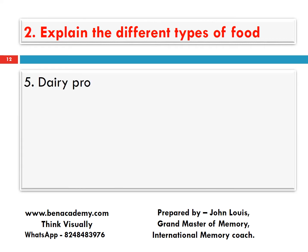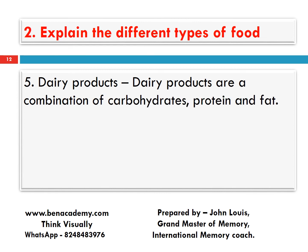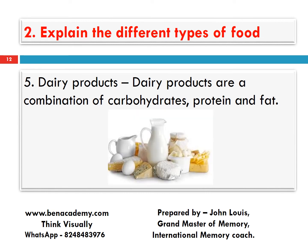Next, dairy products — that means milk products. Dairy products are a combination of carbohydrates, protein, and fat. All three nutrients are there in dairy products. Dairy products are a mixture of, or a combination of, carbohydrates, protein, and fats.